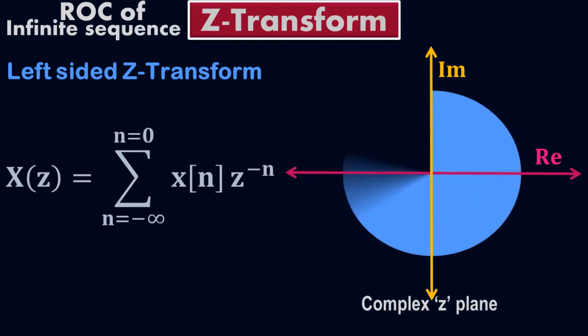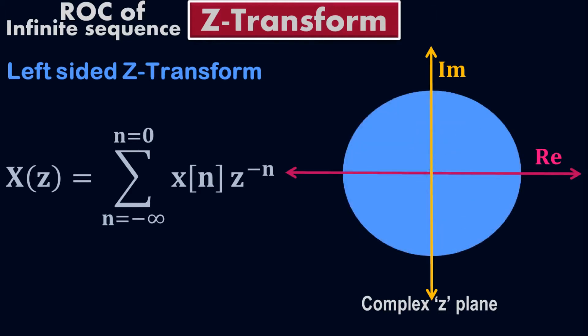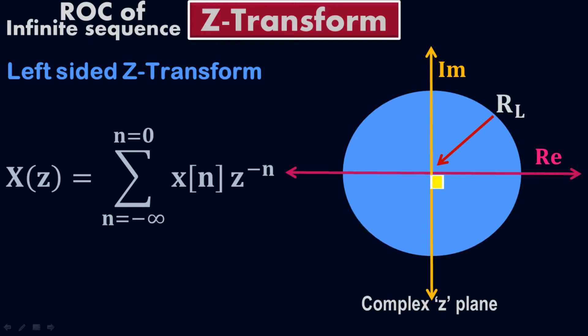The region of convergence for the left-sided Z-transform extends inward — it extends inward from a finite pole. Since n starts from negative infinity up to 0, we are approaching 0. Our last point will be 0.